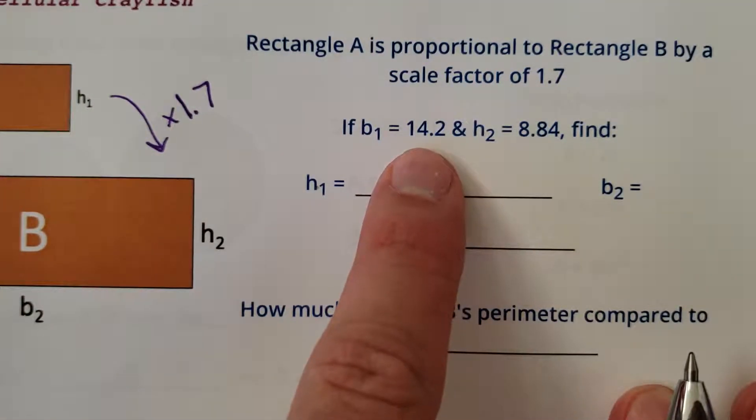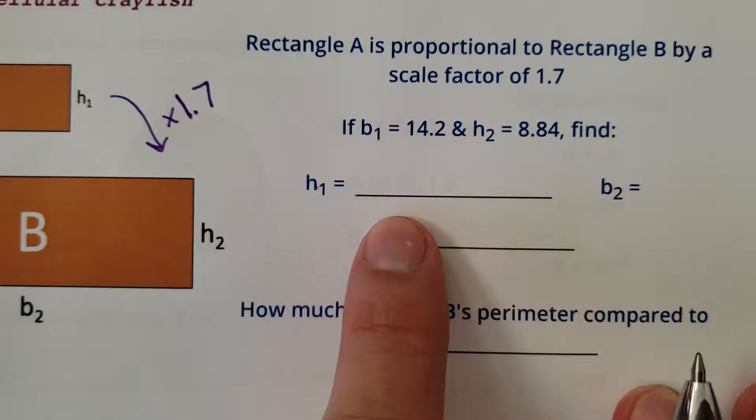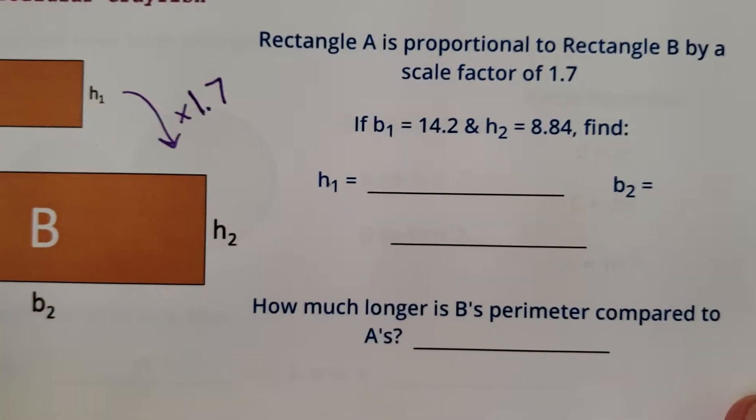It says if B1 is 14.2 and H2 is 8.84, find H1 and B2. Oh, okay. Sweet.